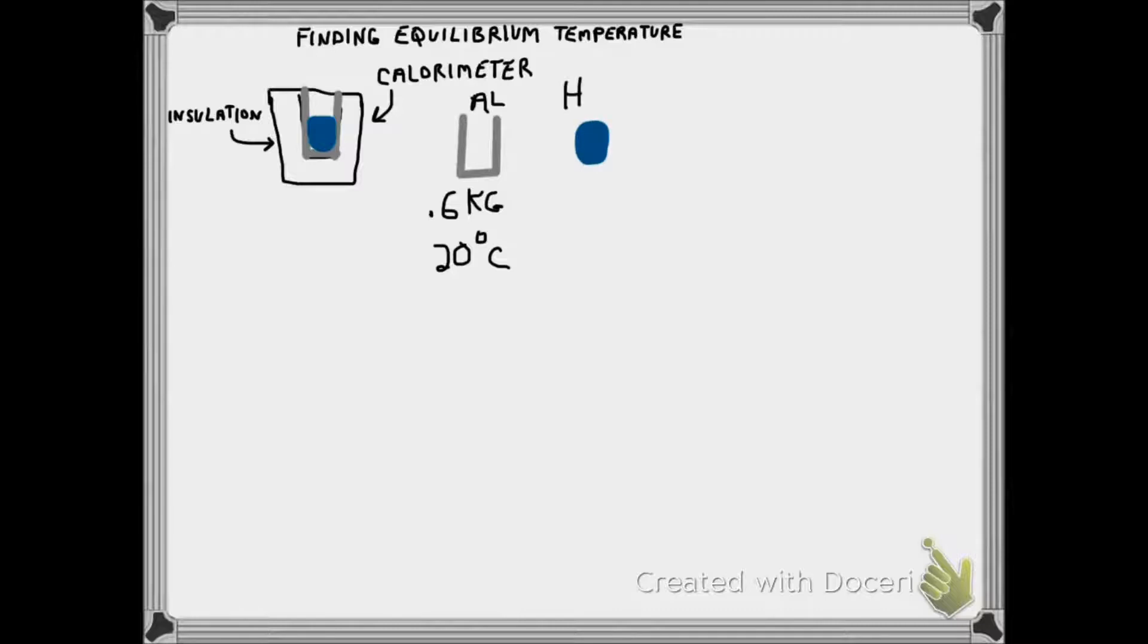In this case, we're going to add 0.5 kilograms of water. It reaches that same 20 degrees C, and we can say the aluminum and the water have reached equilibrium at 20 degrees C.